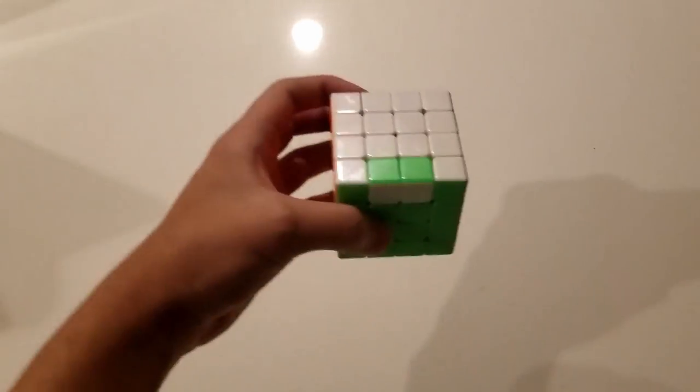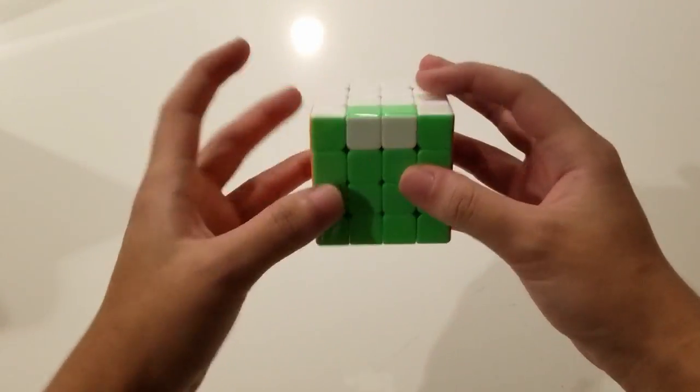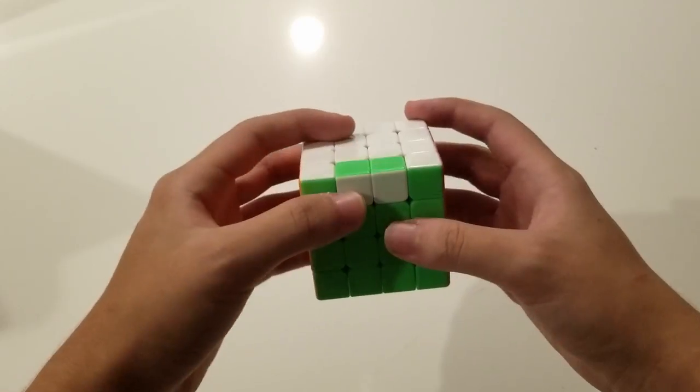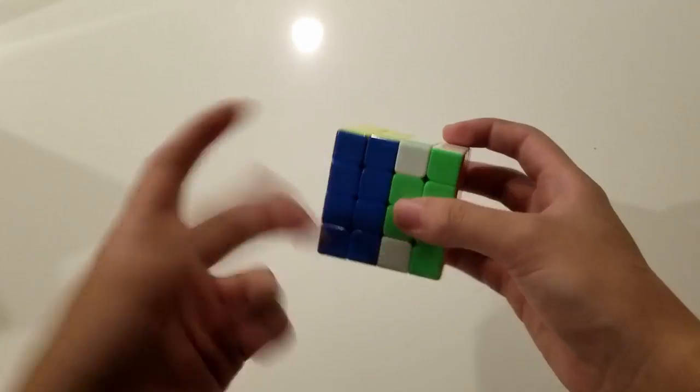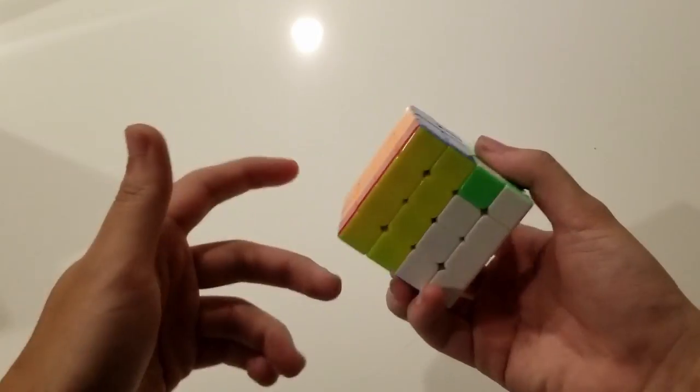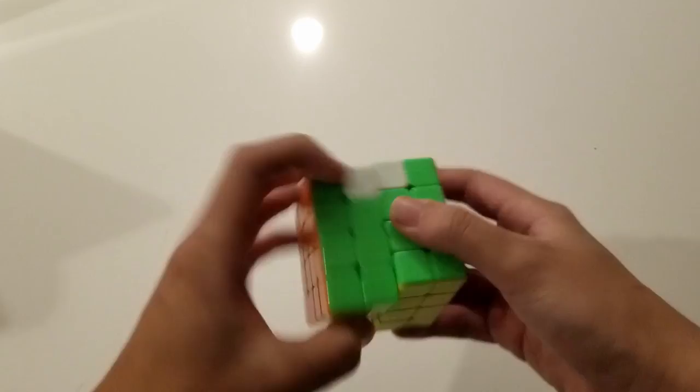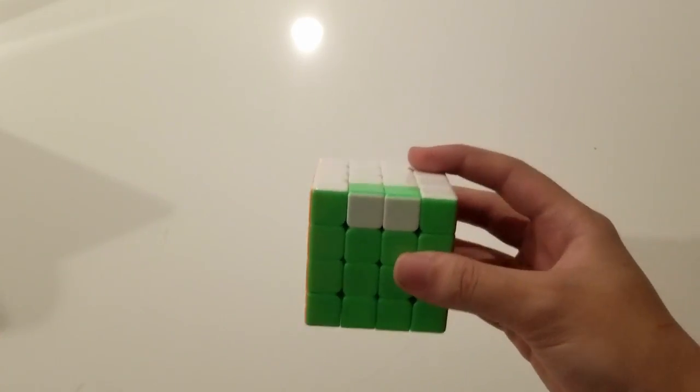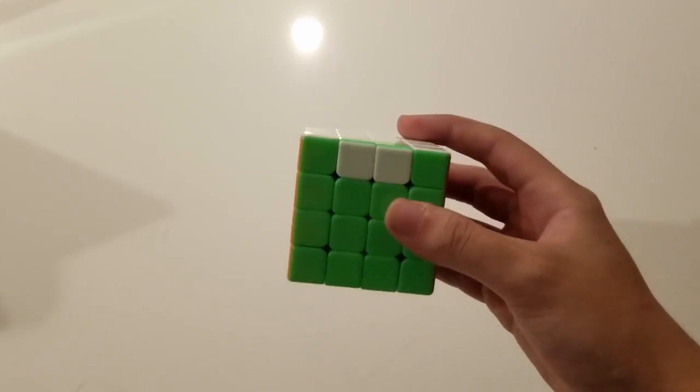The second method is slightly slower but can be helpful in some cases where it's cumbersome to set up the target. For example, we have this case where we can't directly set this up into FDR or BUR because we would have to move our centers out of place and wing parity algorithms are very rarely center safe.